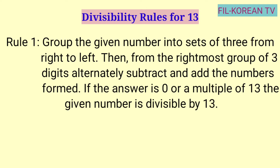Dito sa unang rule, ang gagawin natin sa given number ay igugroup natin sila ng tigta-tatlo galing sa kanan papunta sa kaliwa. Pagkatapos, salitan natin ima-minus at ipa-plus yung grupo ng numbers galing sa kanan papunta sa kaliwa. At kapag yung answer ay 0 or multiple ng 13, yung given number ay divisible by 13. Ibig sabihin, pwedeng i-divide sa 13 na eksakto yung answer. Walang remainder.